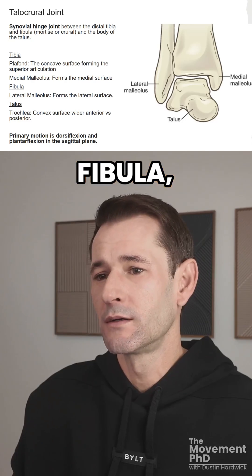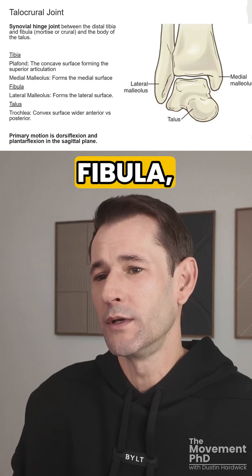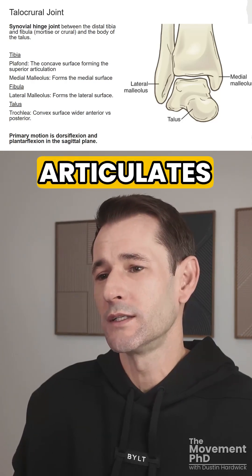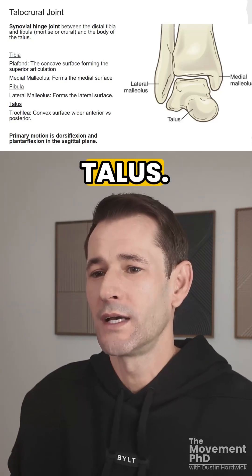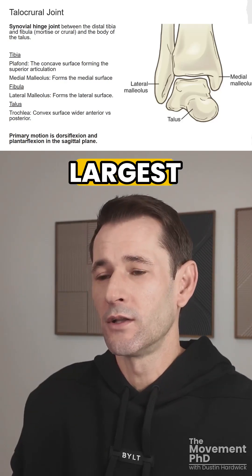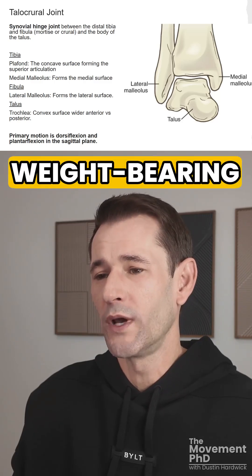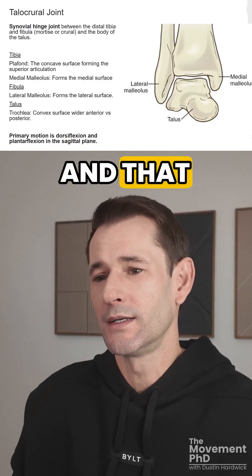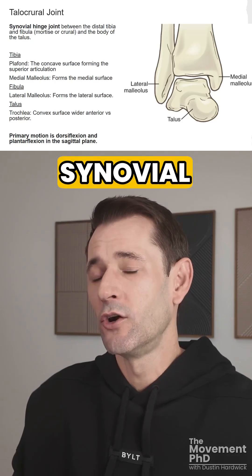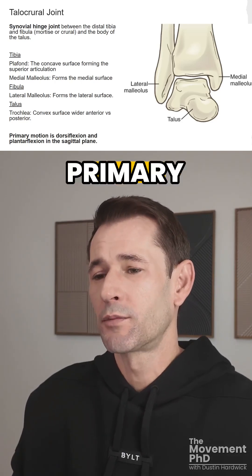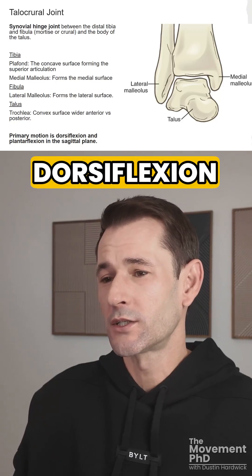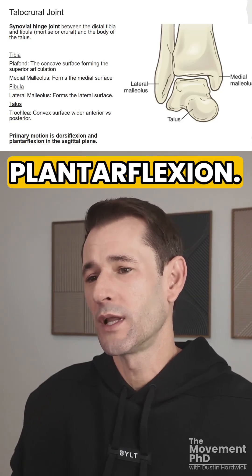The lateral malleolus of the fibula forms the lateral surface and articulates with the lateral facet of the talus. The trochlea is the largest part of the talus and provides most of the weight-bearing surface between the tibia and the talus. Because it is a synovial hinge joint, its primary motion is in the sagittal plane of dorsiflexion and plantarflexion.